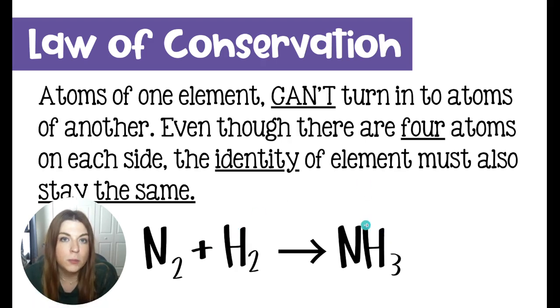If we look over here at the product, we would have one nitrogen and three hydrogens. Again, in total, that's four atoms. But that's not really the way the law of conservation works. Because to turn a nitrogen into a hydrogen, you would have to alter the nucleus, you'd have to get rid of protons. It's not a true conservation.